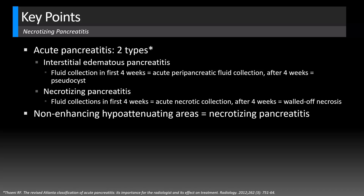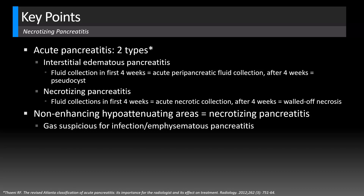Necrotizing pancreatitis is identified by areas of non-enhancing hypoattenuation. You also want to look for any gas, which raises suspicion for infection or emphysematous pancreatitis. The term pancreatic abscess is now discouraged — it's better to specifically say infected pseudocyst or infected walled-off necrosis. Necrotizing pancreatitis is more likely to be complicated by superinfection. There are two types: parenchymal, involving just the pancreas, and peripancreatic, extending into the mesenteric and omental fat — you can also have both, as in this case.